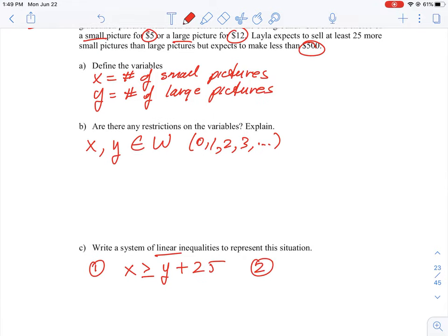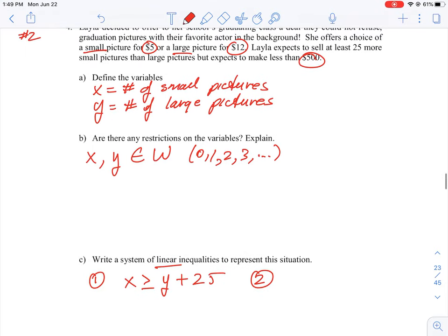Our second equation is our cost equation. We know that for every small picture, we charge $5. So the value of that is 5x. The large picture we sell for $12. So our value is 12y. And we're going to make less than $500, which means we could make less than or equal to $500. So at this point, these are two equations that we would need to graph.